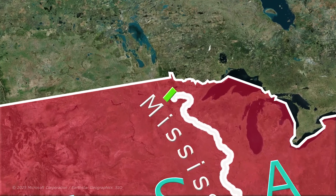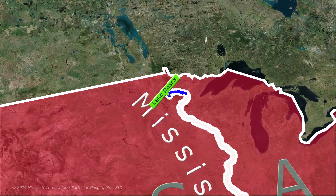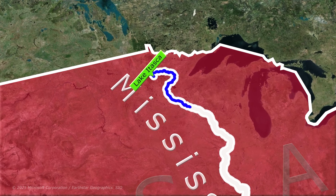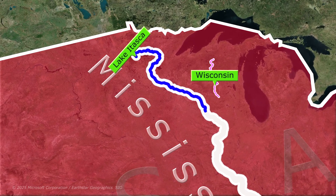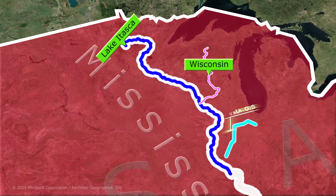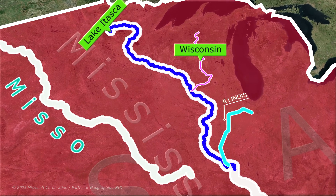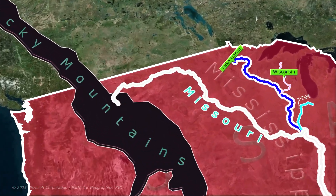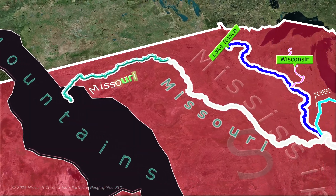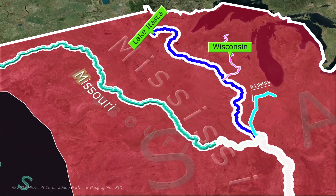The Mississippi River originates from Lake Itasca in the United States, and along its course, it is first joined by the Wisconsin River, followed by the Illinois River. Further ahead, the Missouri River, which originates from the Rocky Mountains, joins the Mississippi near St. Louis.